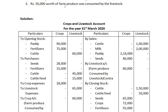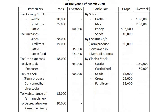50,000 worth of farm produce was consumed by livestock. This is a contra entry: it has to be debited in the livestock account column and credited in the crop account column, recording it in both accounts.